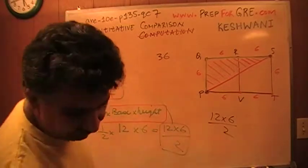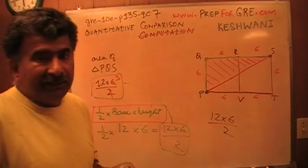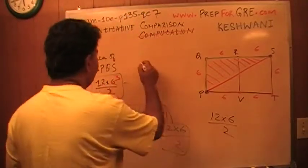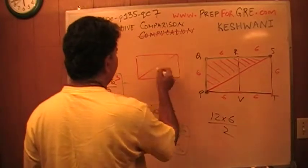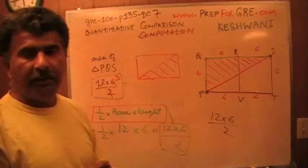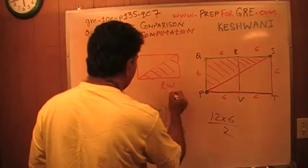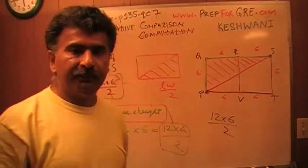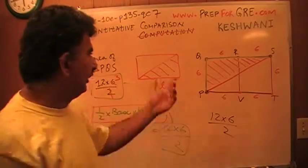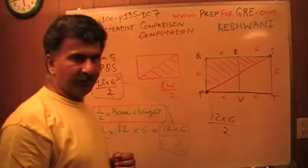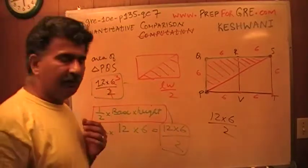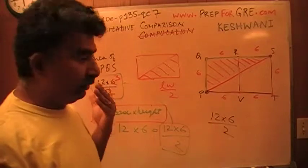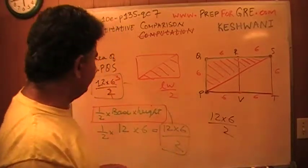Where does the formula one-half base times height come from for the area of a triangle? Because any triangle is nothing but half a rectangle. If you have a rectangle and take half of it, that's your triangle. And how do you find the area of a rectangle? Length times width. And if you take half of that, that's your triangle. But when dealing with triangles, we don't use the terminology length times width. The convention is we call it base times height. It doesn't matter because they're being multiplied. If two quantities are being multiplied or added, the terminology doesn't matter. If they were being divided or subtracted, then we would have to worry.